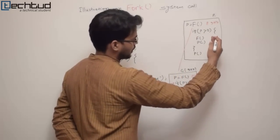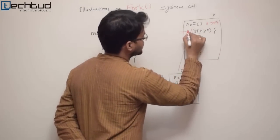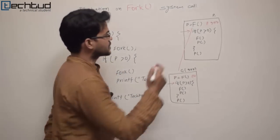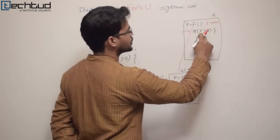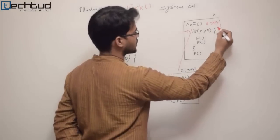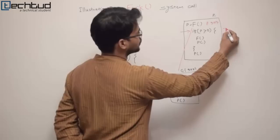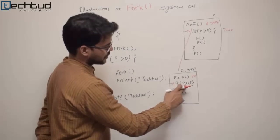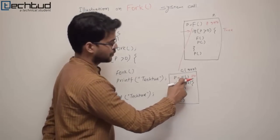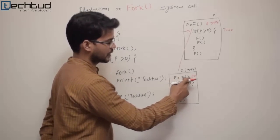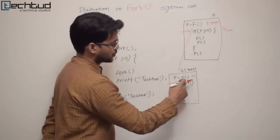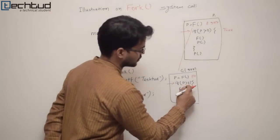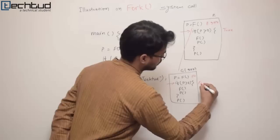From both processes — parent and child — execution starts from the next instruction. For the parent, p has value 347, so the condition p greater than zero is true. But for the child, p has value zero from this fork, so p is not greater than zero — the condition is false.